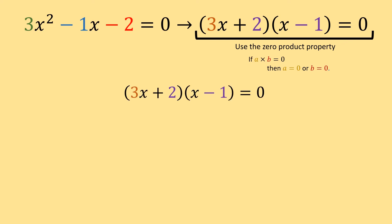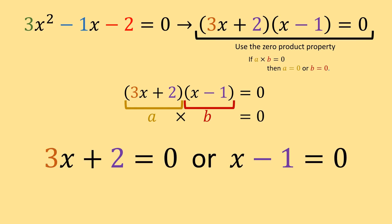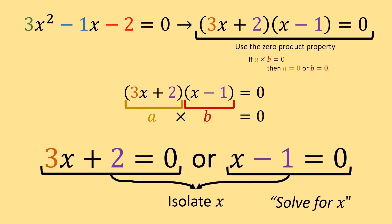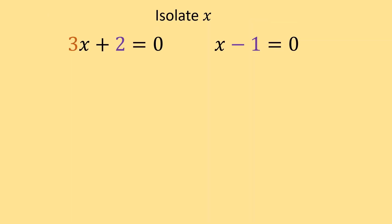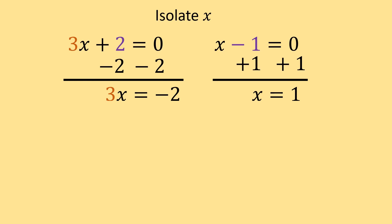For our factored form, we think of 3x plus 2 as a, and x minus 1 as b, and both are multiplied together. So that means 3x plus 2 equals 0, or x minus 1 equals 0. We now isolate x in each. For 3x plus 2 equals 0, subtract 2 from both sides. For x minus 1 equals 0, add 1 to both sides. That gives us 3x equals negative 2 and x equals 1. Then divide by 3 to get x equals negative 2 over 3. Our two values are x equals negative 2 over 3 and x equals 1.